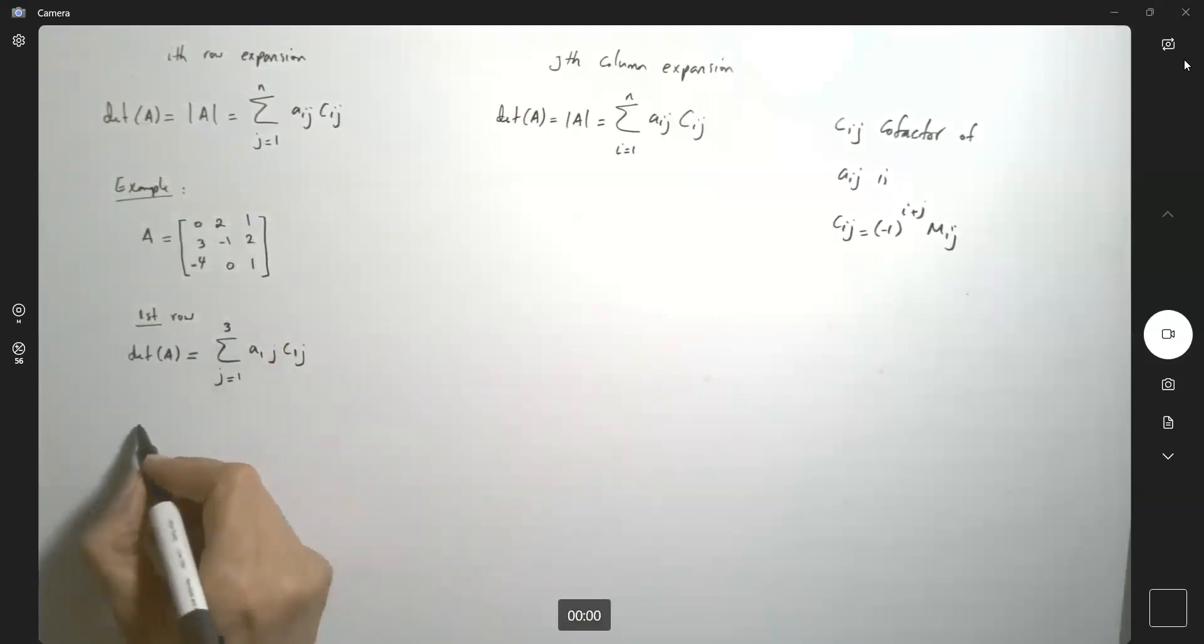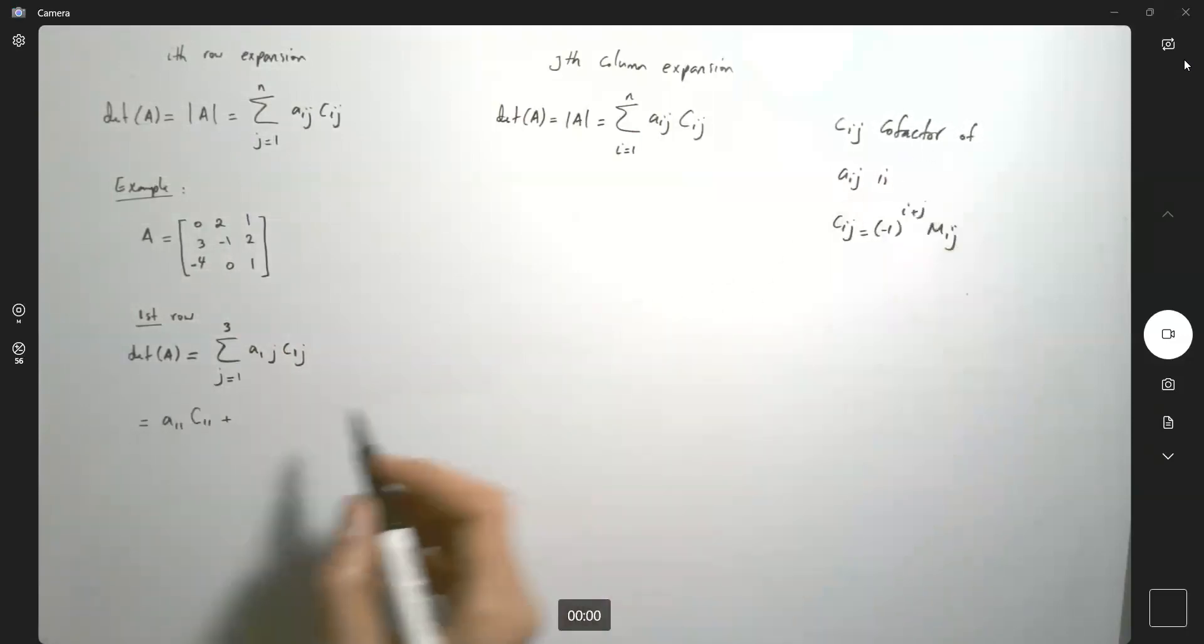Let's see. It's going to be the sum of A1,1 times C1,1 plus (let's capitalize this so you know we're talking about the cofactor) plus A1,2 times C1,2 plus A1,3 times C1,3.